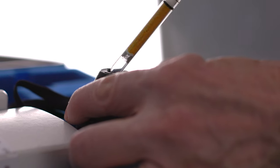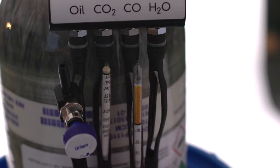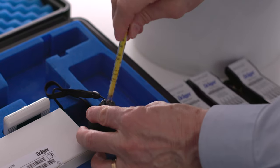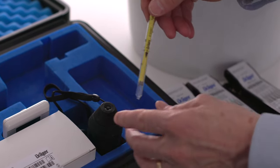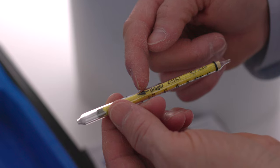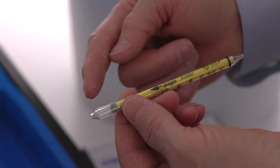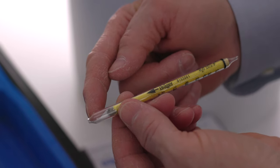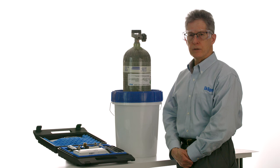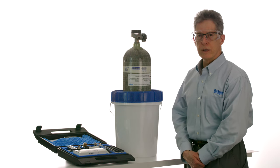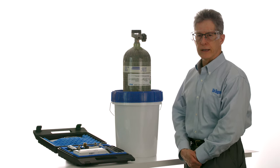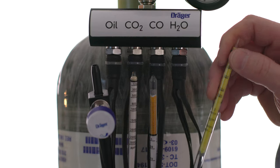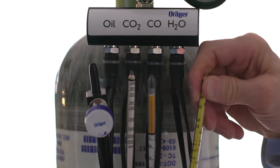Do the same thing for the carbon monoxide tube. Finally, take one of the water vapor tubes, but in this case, we only remove the tip from the outlet end of the tube, the end the arrow points towards. This tube is extremely sensitive to ambient humidity, so we won't remove the other tip until we're ready to start the test. Insert the tube into the holder, leaving the top part disconnected.